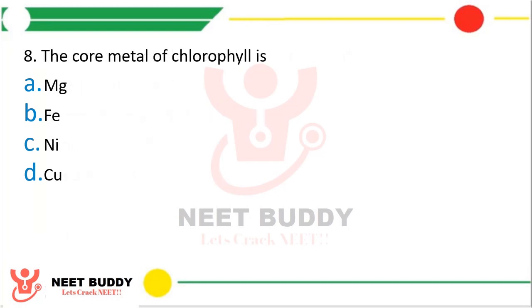Question 8. The core metal of chlorophyll is — option A: Magnesium, option B: Iron, option C: Nickel, or option D: Copper? The correct answer is option A, magnesium.